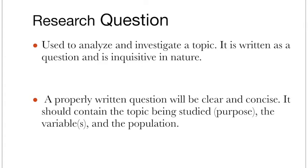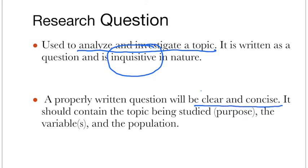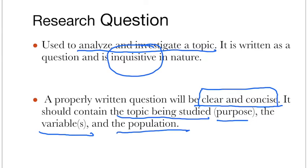Research questions are used to analyze and investigate a topic. When we have the research questions, it helps us to analyze or investigate a topic. It is written in question form and has some inquisitiveness in it. A properly written question will be clear and concise — in research, we always put emphasis on these two words. Our approach should be clear, our thinking should be clear, and we should communicate specifically to the concerned population or area for which we are doing the research. The question should contain the topic being studied, the variables or parameters we are considering, and the population we are studying.